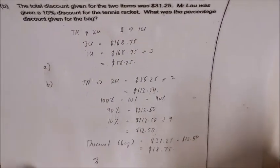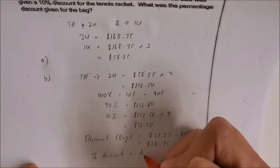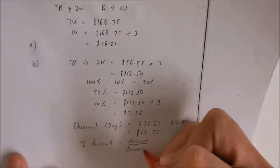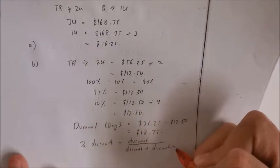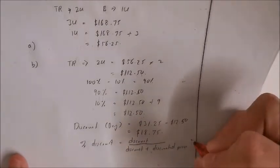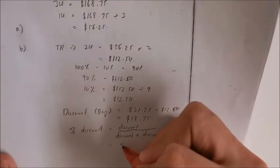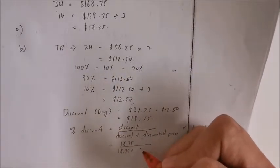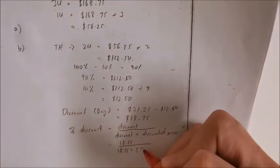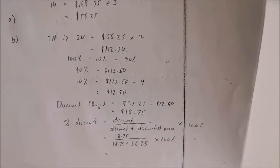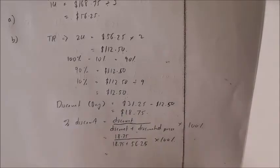We can follow this formula: percentage discount equals the discount given over the original price, times 100%. To find the original price, we take the discount plus the discounted price. So in this case, it will be $18.75 over ($18.75 plus the discounted price of $56.25), times 100%. It seems a bit complicated, but just use the calculator and we will get 25%.